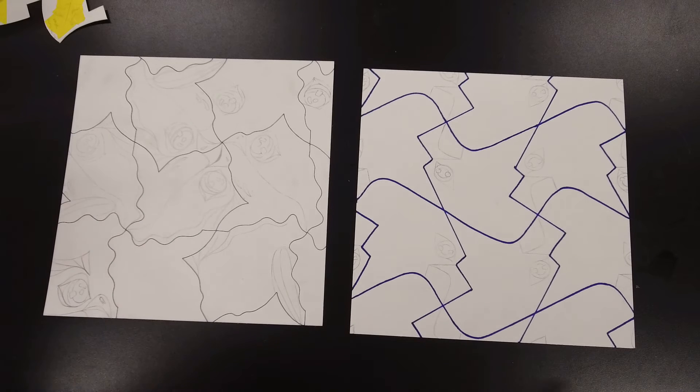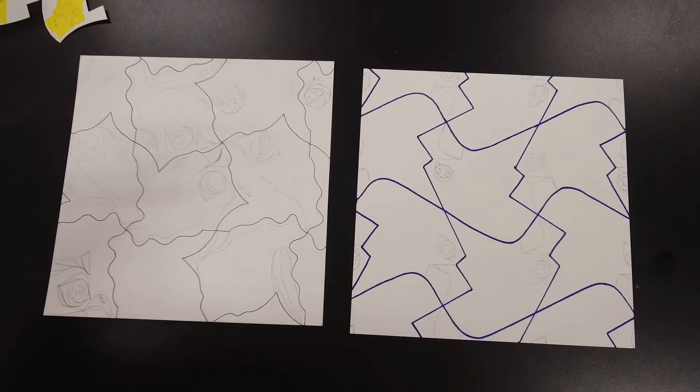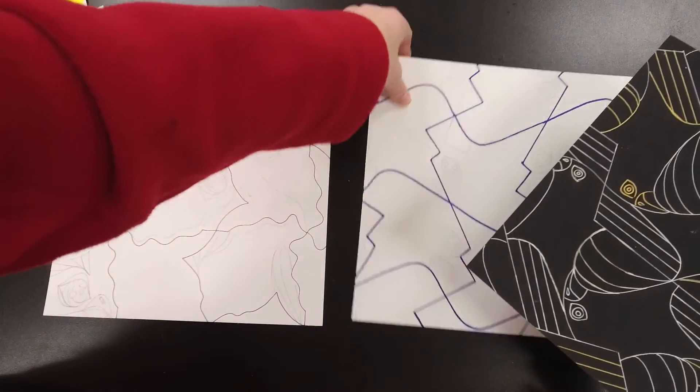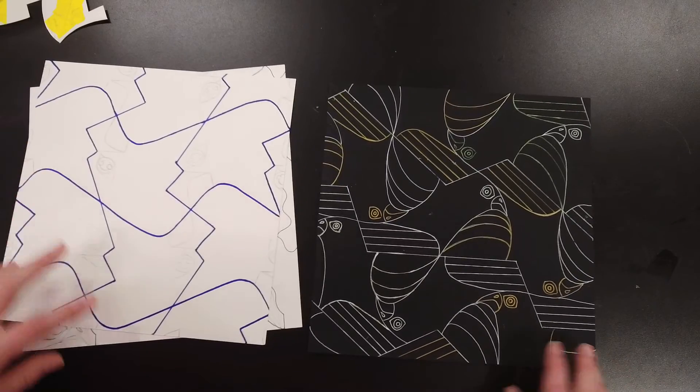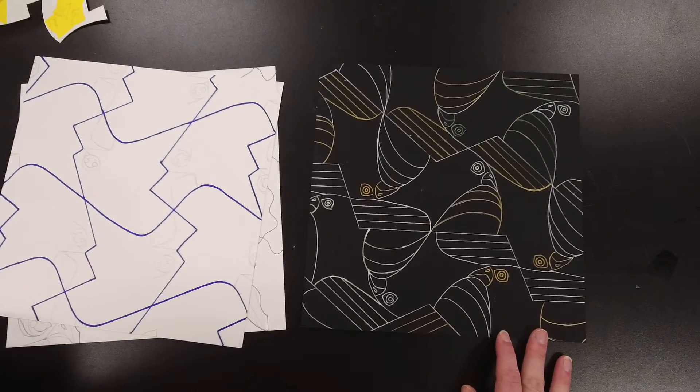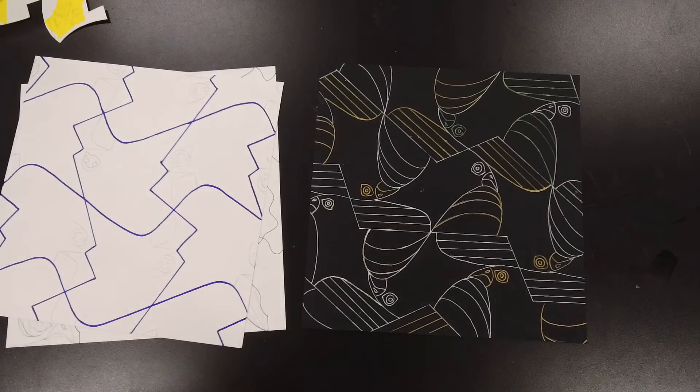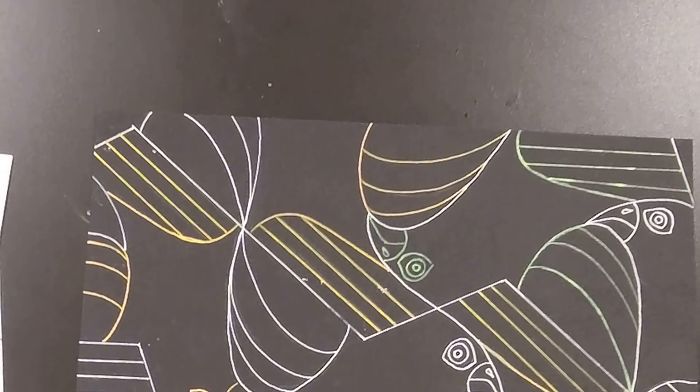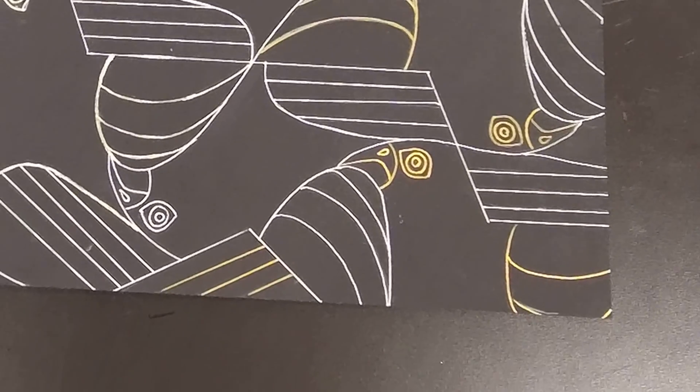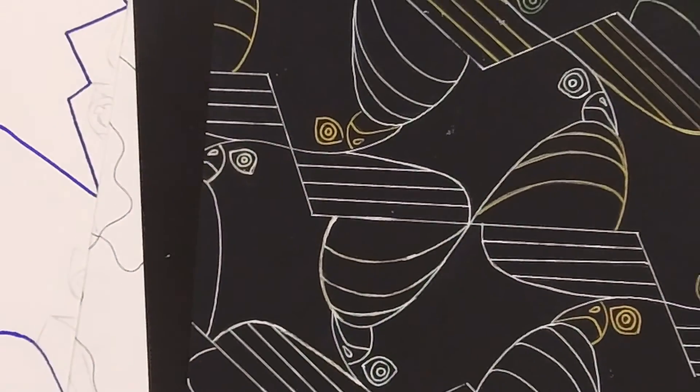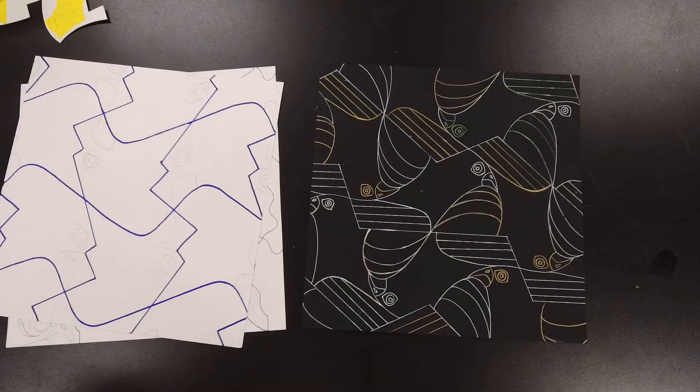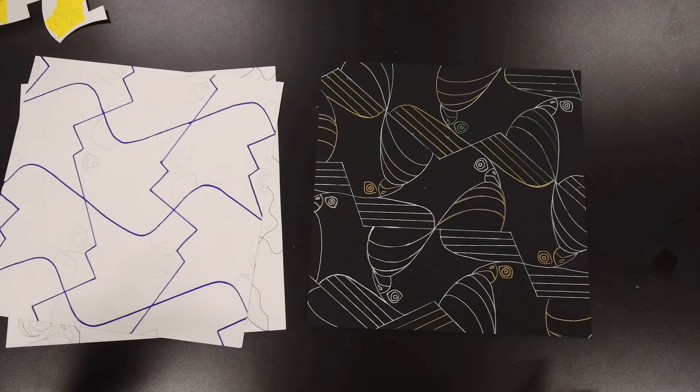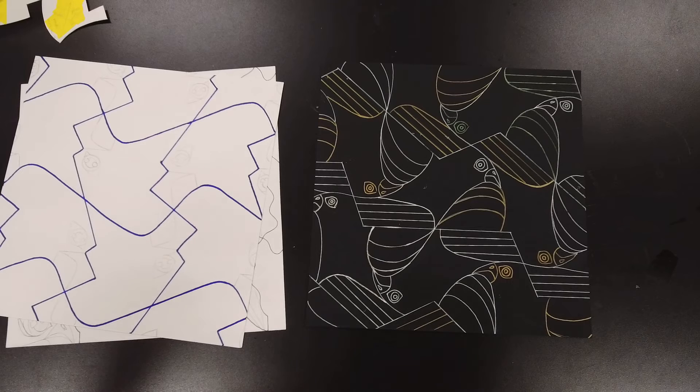And then my other example here on the black paper is a reflection transformation as well. And what I have done is actually used a white and a gold pen to go around and kind of go over all of my designs. And then the next thing would be to add colored pencil to actually color each of those birds and make each one stand out a little bit more within that pattern.